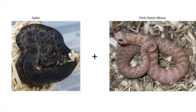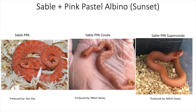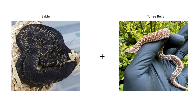Next up we're combining the sable and pink pastel gene. Pink pastel is a T-negative albino, separate from regular albino. When you combine these two you get what's called a sunset. You can see the normal form, the conda form, and the super conda form. It's a very unique combination and not a lot of people are currently working the sunset project.